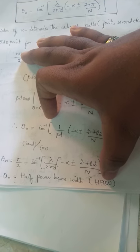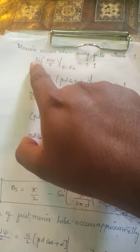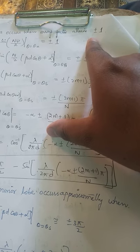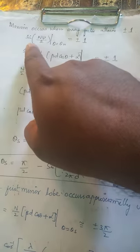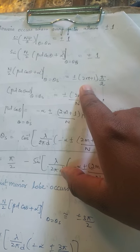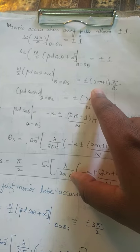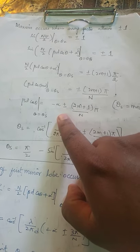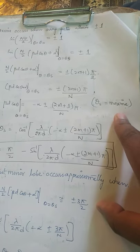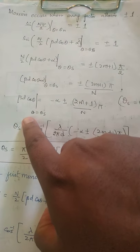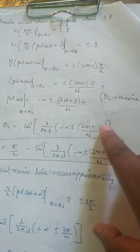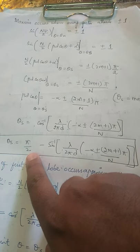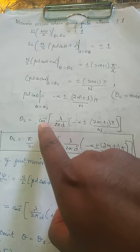Next we want to find out the maxima — how the maxima will occur for the array factor. Previously we compared with zero; now we compare with one. The general solution of sine equals one gives N·chi/2 = pi/2 plus N·pi times two, written as (2N+1)·pi/2. Shifting alpha, we get theta_s. Beta·d shifts: with beta = 2·pi/lambda into d with the given factor. This cos(theta) in terms of sine is cos(theta) = sin(90° minus theta), giving pi/2 minus sine_inverse of the given factor.